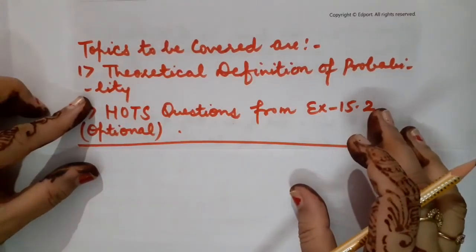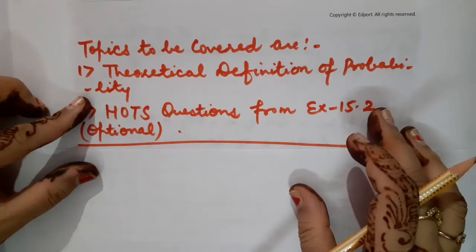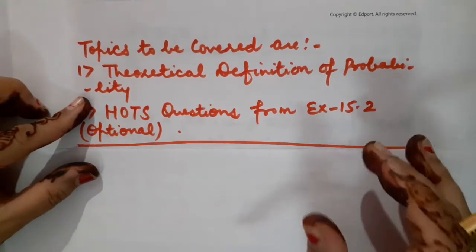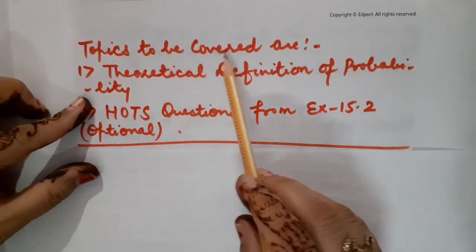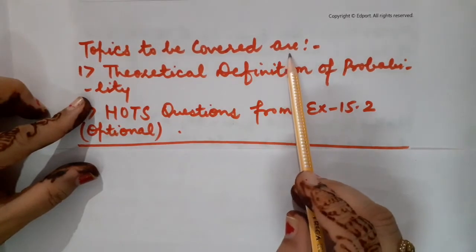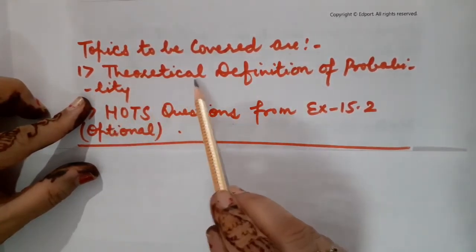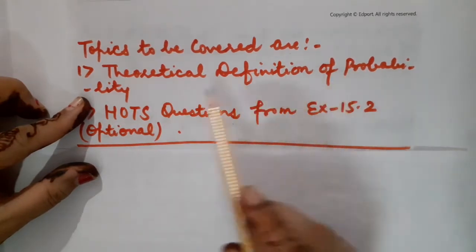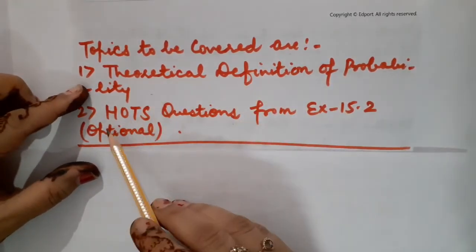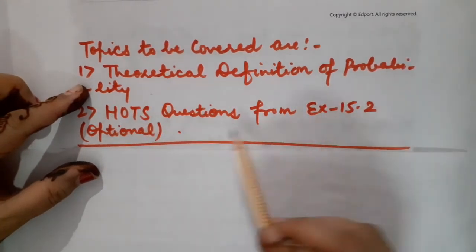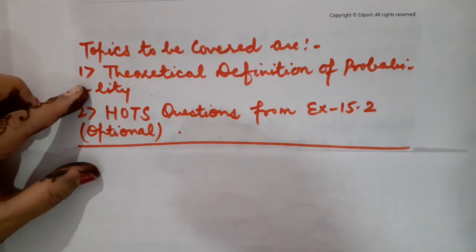Okay children, in my previous lecture, we started with the horse questions of exercise 15.2. So the topics I am going to cover in today's lecture, lecture number 4: first, I will be making you recall the theoretical definition of probability, and after that I will be proceeding with horse questions from exercise 15.2, which is an optional exercise of NCERT.